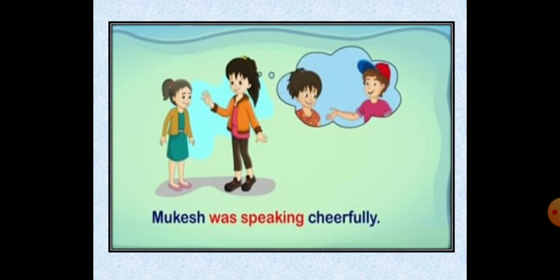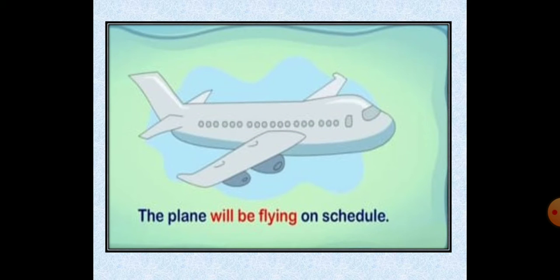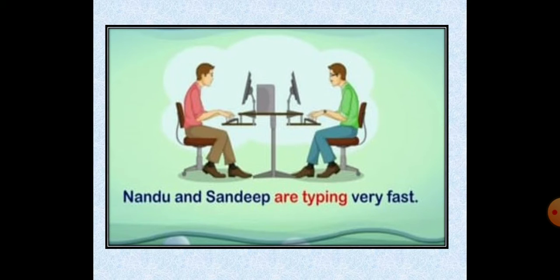This ing verb form indicates that the incident continues in the past, present or future. 'The plane will be flying on schedule.' Plane ya flight jo hai, woh schedule par hi jayegi future mein — ongoing hoga. In present tense: 'Nandu and Sandeep are typing very fast.' Nandu aur Sandeep abhi present mein typing kar rahe hain, aur very fast.